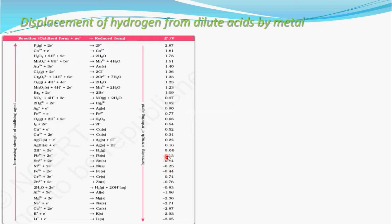Negative electrode potential means low reduction potential. All electrode potentials here are reduction potentials. Metals with negative electrode potential have less reduction potential, meaning they will not undergo reduction easily — so they will undergo oxidation. Metals placed below hydrogen have negative electrode potential, less reduction potential, and will undergo oxidation and liberate electrons.